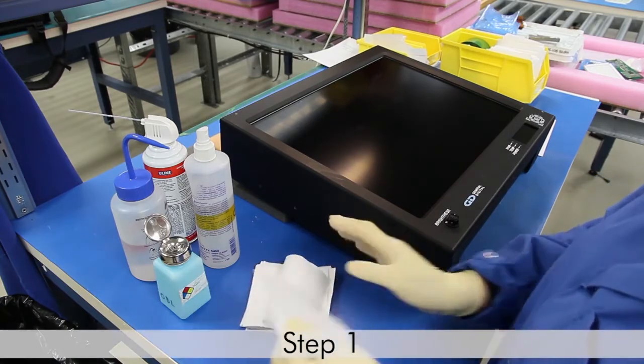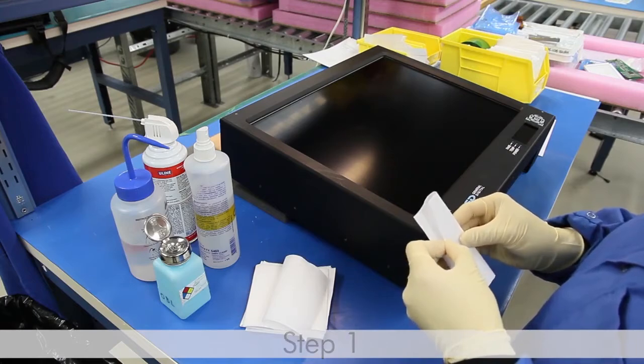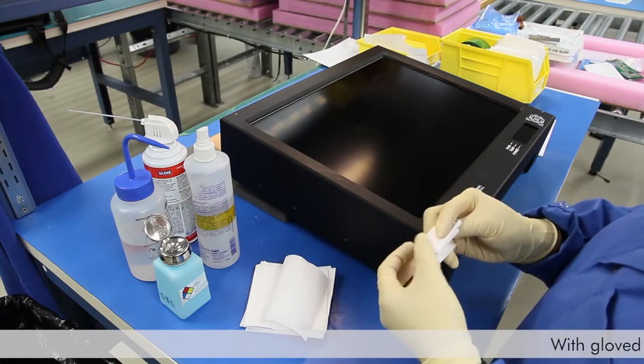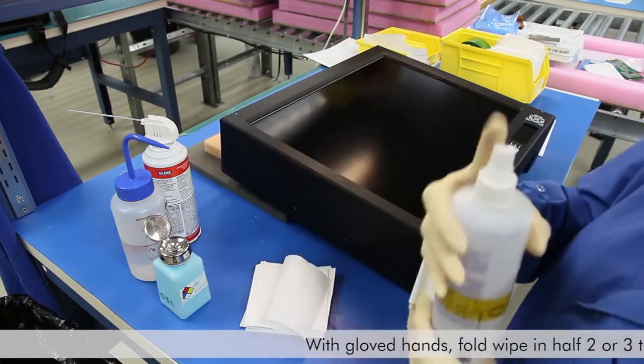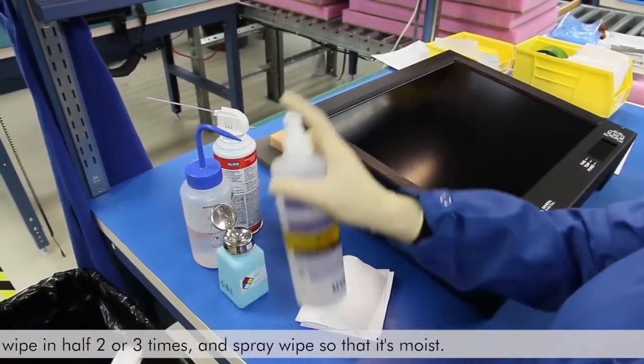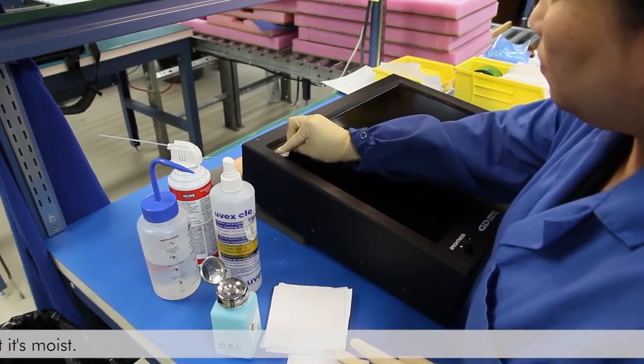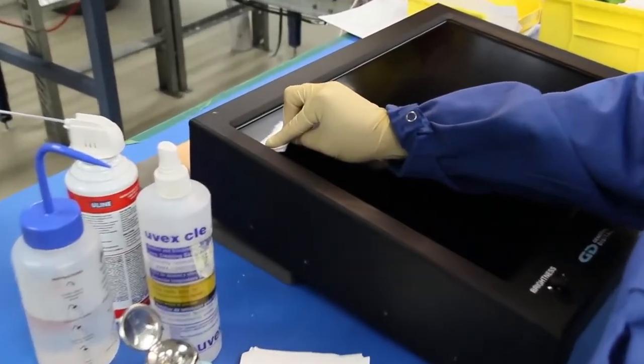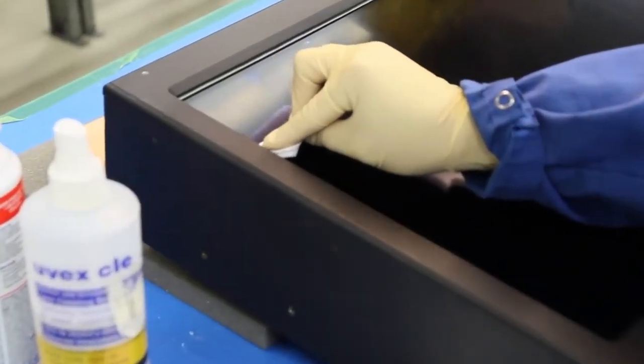Step 1: Put the oil-free gloves on. Fold a lint-free wipe in half twice, and then spray the wipe so that it's moist but not dripping. Remember to never spray the monitor directly, as this can lead to liquid seeping beneath the LCD and damaging the electronics.